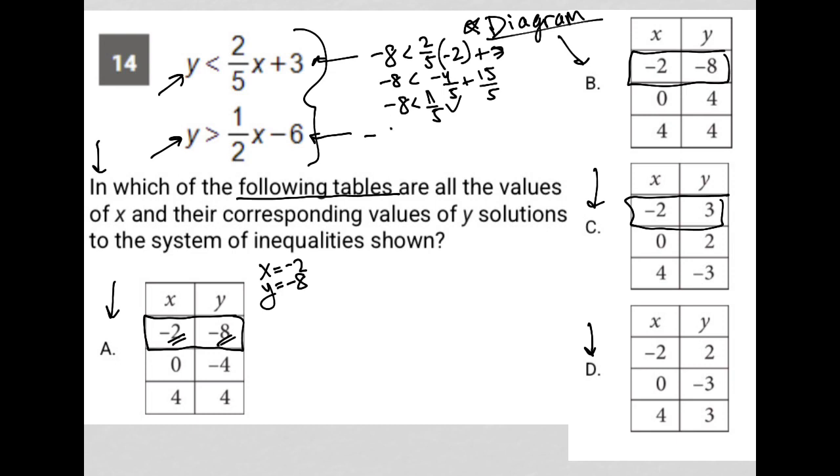Here, I'd have negative 8 is greater than 1 half times negative 2 minus 6. I have negative 8 is greater than half times negative 2 is negative 1. Negative 1 minus 6 ends up being negative 7. So negative 8 is greater than negative 7. And that is not true. And because that's not true, that means all of answer A is incorrect.